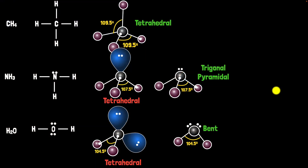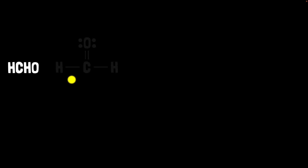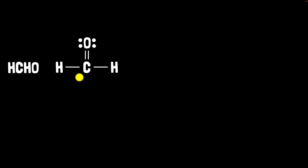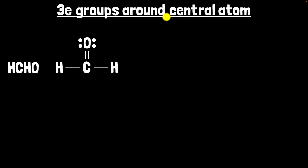Next up, we'll look at formaldehyde, whose Lewis structure looks like this. Looking at the central atom — carbon — I count the electron groups around it: one, two, and what about the double bond? VSEPR doesn't care whether a group is a single bond, a double bond with four electrons, or a lone pair. The double bond still counts as one single group. So there are one, two, and three electron groups around the central atom.